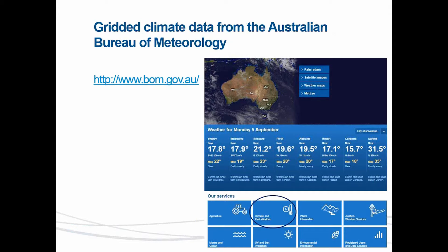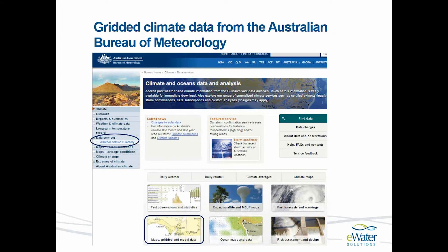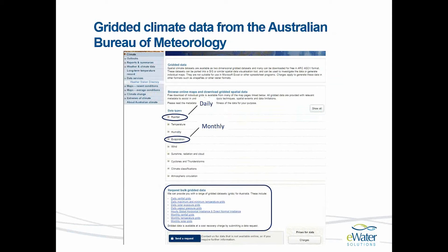The Australian Bureau of Meteorology makes data available from its website on the Climate and Past Weather tab. If you go to that tab you will find that on the left-hand side there are a number of options, and one of those is to access data services. Maps, gridded and model data is the portal that you would most likely be using to access the Bureau's data. The Bureau of Meteorology has a number of different climate data sets — the ones we're interested in are rainfall, available as daily grids, and evaporation, available as a monthly set of grids.